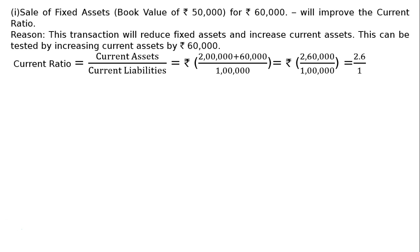Part I: Sale of a fixed asset with book value Rs. 50,000 for Rs. 60,000 will improve the current ratio. Reason: this reduces fixed assets and increases current assets (cash received at Rs. 60,000). Tested by increasing current assets by Rs. 60,000: Current ratio = (Rs. 2 lakh + Rs. 60,000) / Rs. 1 lakh = Rs. 2,60,000 / Rs. 1 lakh = 2.6:1. The current ratio increases, hence it will improve.